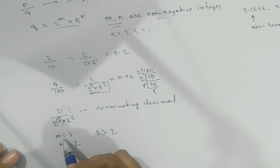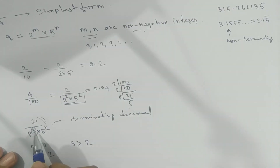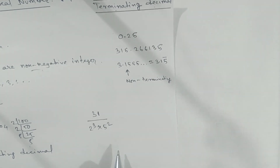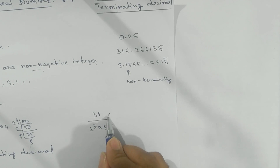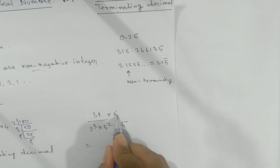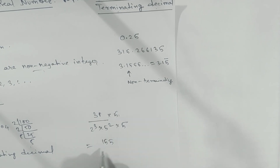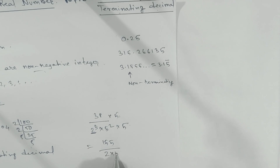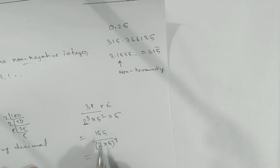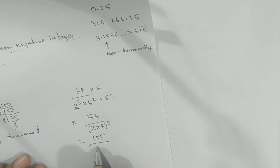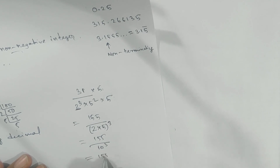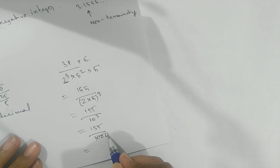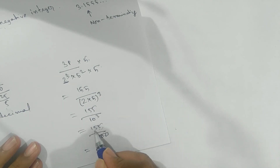To find the decimal expansion of 31 by 2³ into 5², multiply numerator and denominator by 5. We get 155 in the numerator, and the denominator becomes 2 to the power 3 into 5 to the power 3, which equals 10 to the power 3, that is 1000. Now 1000 has three zeros, so we count 1, 2, 3 decimal places and get 0.155.